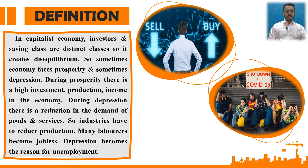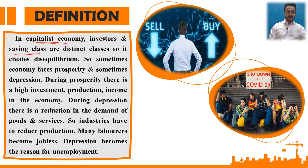Let me give you clarity. In a capitalist economy, investors and the saving class are distinct classes — one class saves and the other class invests. These are the distinct classes, so it creates disequilibrium. Sometimes the economy phases prosperity and sometimes depression.